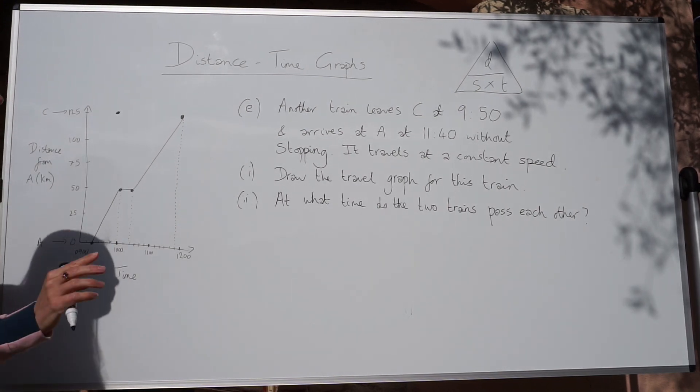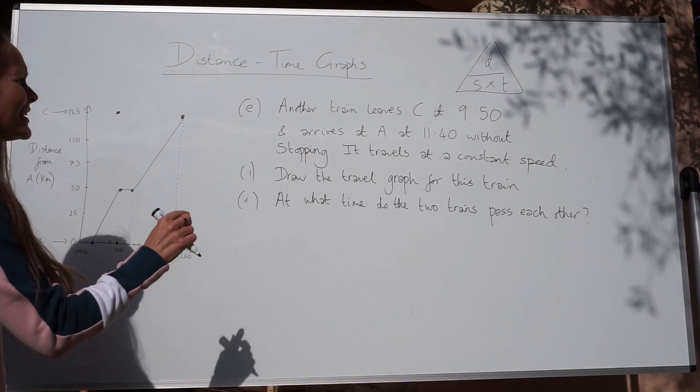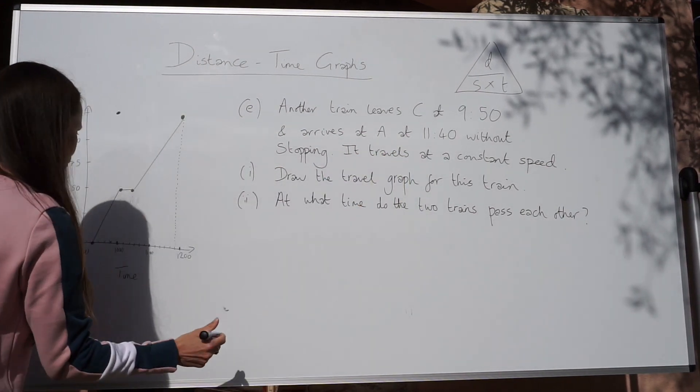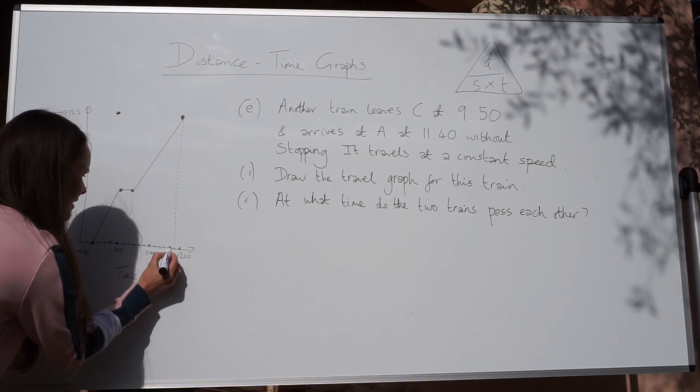You can do it a little bit more accurately on an exam question because they give you the grid. Then it arrives at A at 11.40. So 11.40 is four little squares after 11.